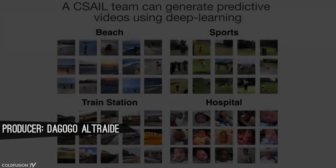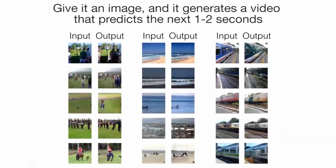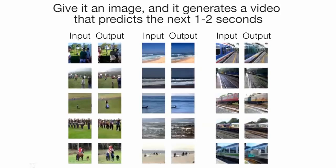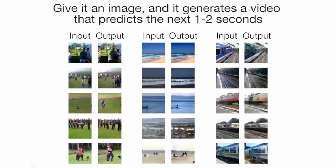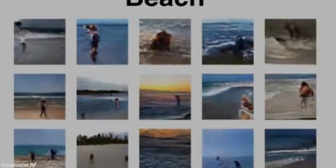The episode included an AI that could look at a static image and dream up a video of what it thought would happen in the next few seconds — yes, it created a video from a still image. I went on to describe another AI that could guess what's happening in a scene just by listening to the audio.